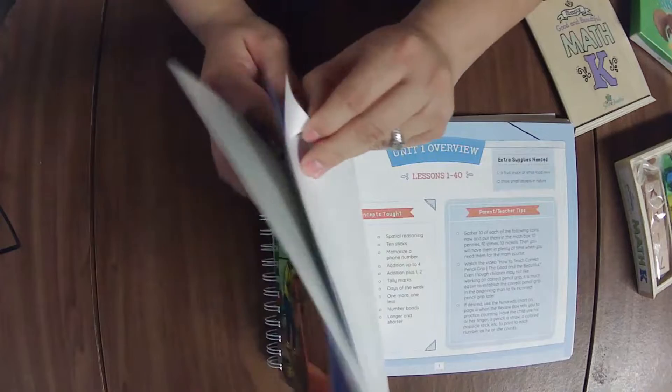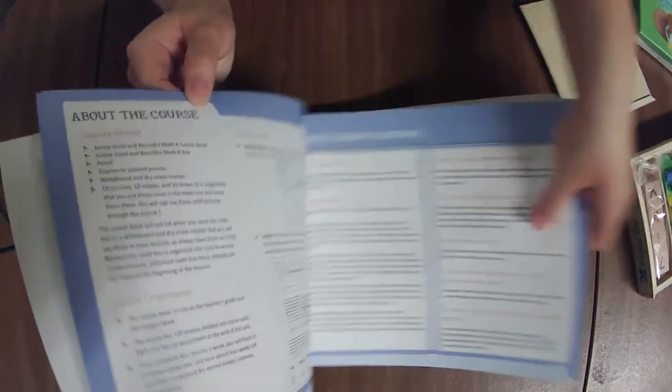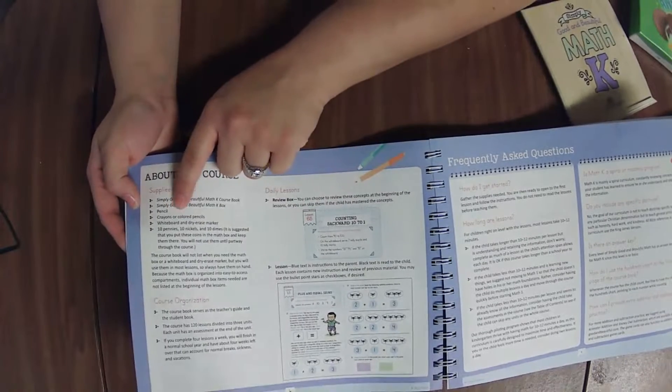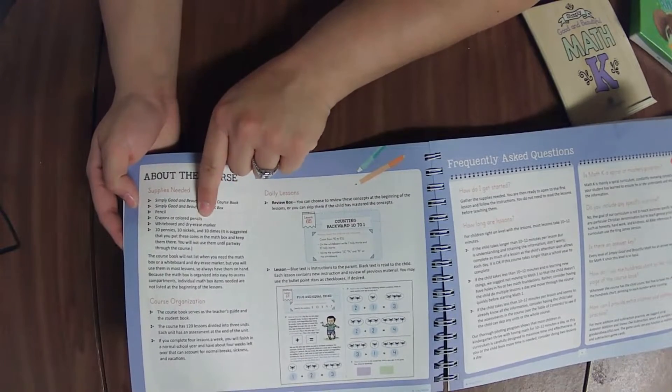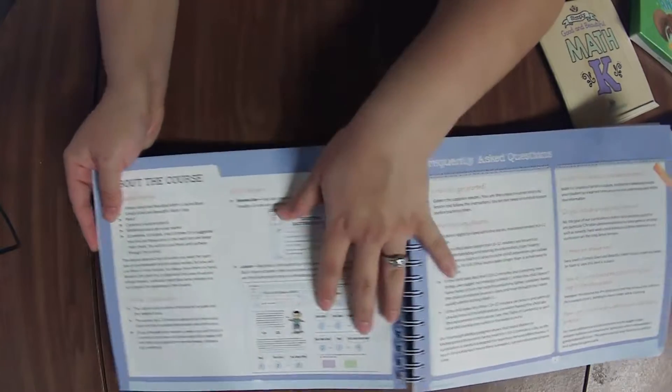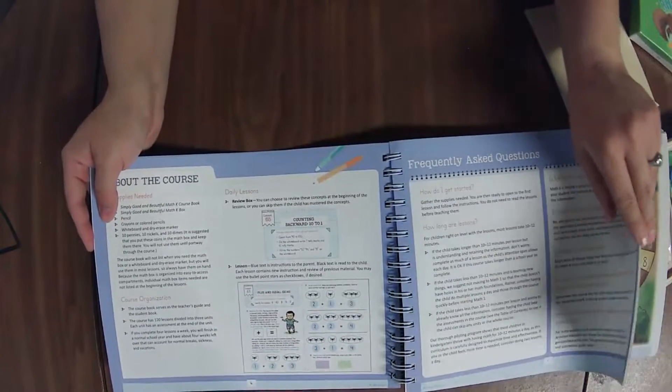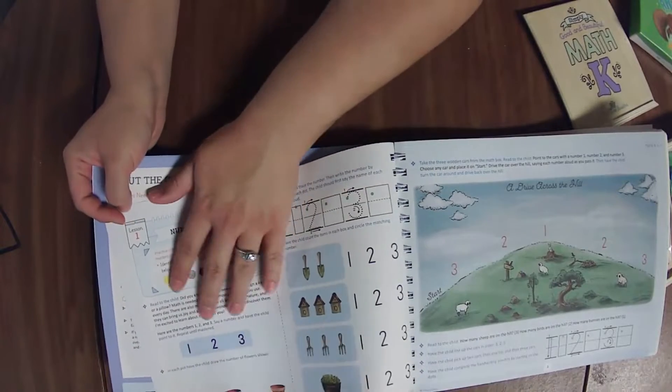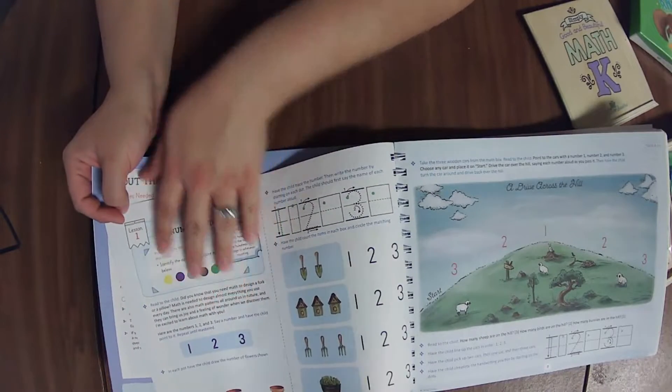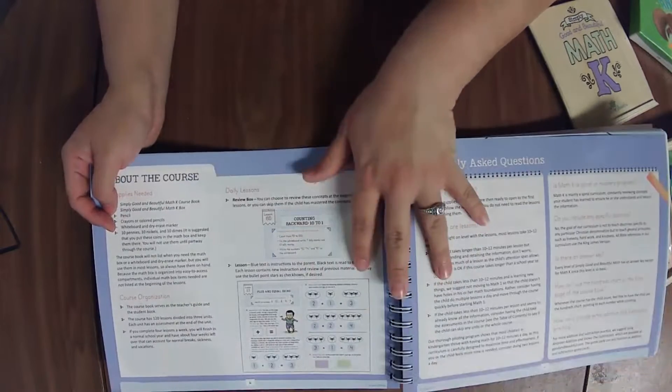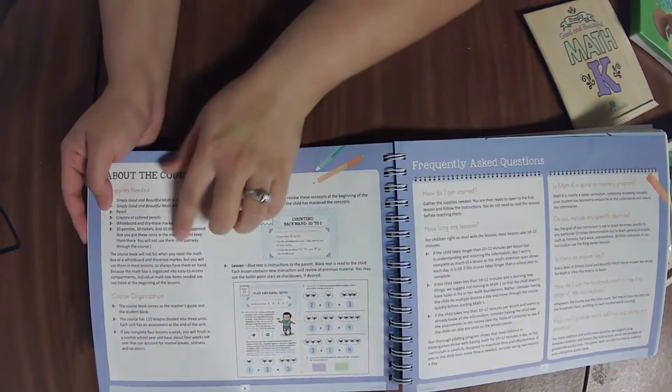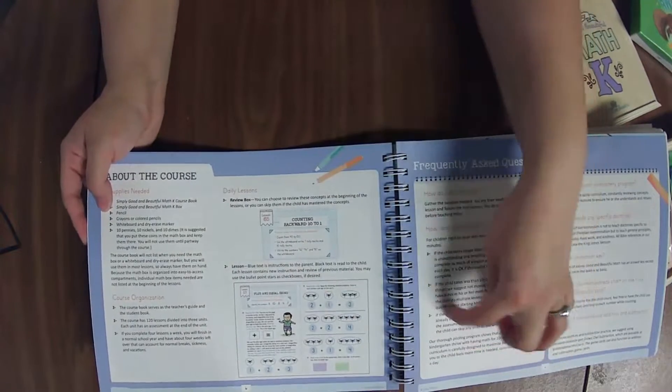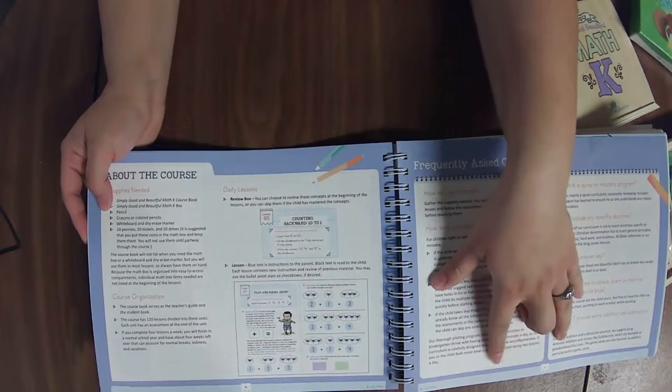So here at the beginning, about this course, it says that you'll need the course book, the math box, a pencil, crayons of course, whiteboard and dry erase marker. Honestly I like to just write it in the book. Like they'll say write the equation, I don't know if you get in here and it's like write this equation that's already in the book, I usually point it out in the book. But you can have a whiteboard if that works for you and your kiddo.